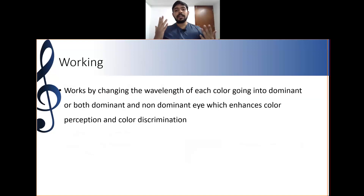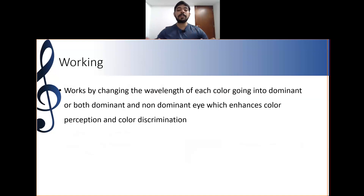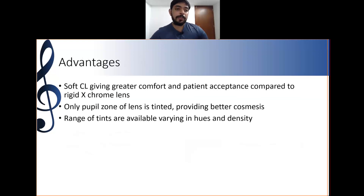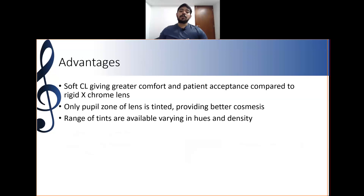Color vision correction lenses help the patient discriminate between colors — for example, red will appear brighter than other colors. The advantages include: soft contact lenses giving greater comfort and patient acceptance compared to rigid lenses; only the pupillary zone is tinted providing better cosmesis; and a range of tints available varying in hues and density.